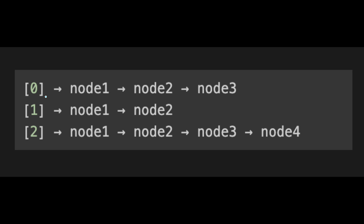Look at this example: 0, 1, 2 are indices of the array. At index 0, we have node one connected to node two, which is connected to node three. So at index 0 we have a lot of data like this. If we want to find data, we iterate through from node one to node two to node three. This is the key point to solve this question.